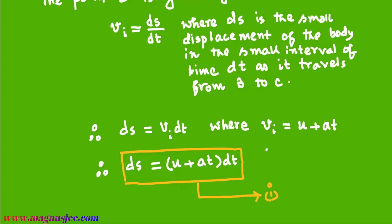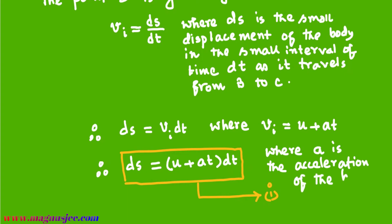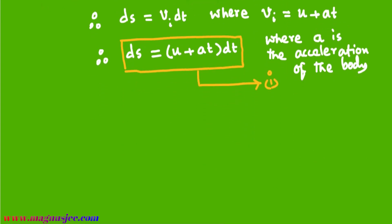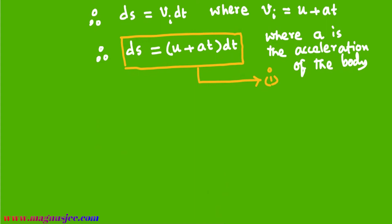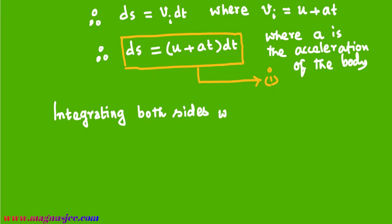Here, a is the acceleration of the body. Integrating both sides, we get the integral of ds equal to the integral of (u plus at) dt.